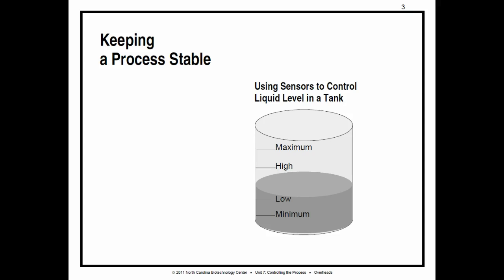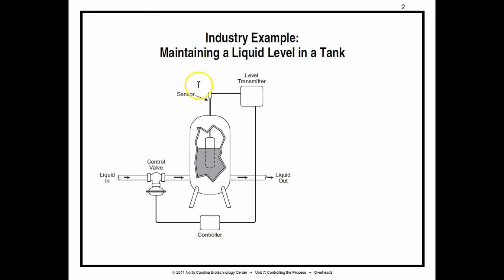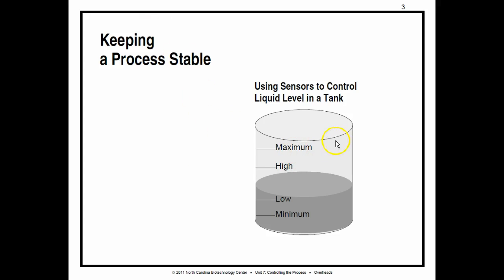So, in the example of what we were looking at previously, this idea of keeping a liquid inside of a tank, we probably would have four different sensors or four different levels that we would want to monitor. We would have a minimum, which is the dangerous point. We would have a low point. We would have a high point, and we would have a maximum point. Minimum might be like where your low gas light comes on.